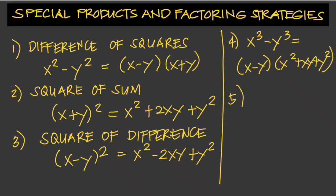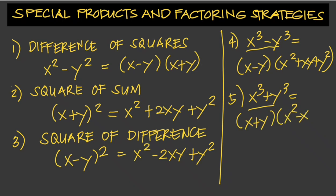The next one is the sum of cubes: x cubed plus y cubed, which is equal to x plus y times x squared minus xy plus y squared. Those are the special products we need to look into when factoring.